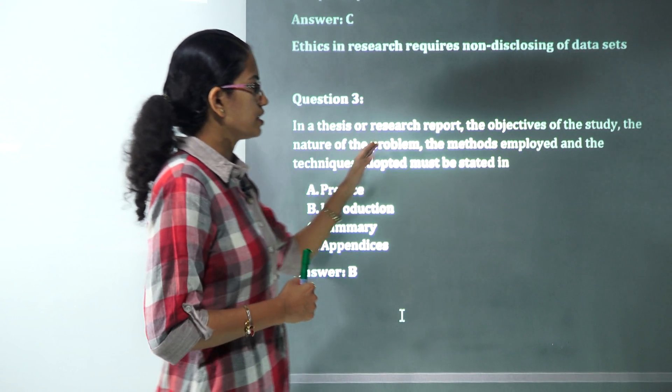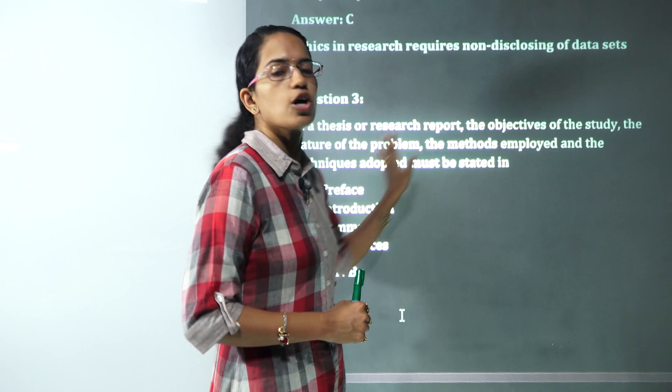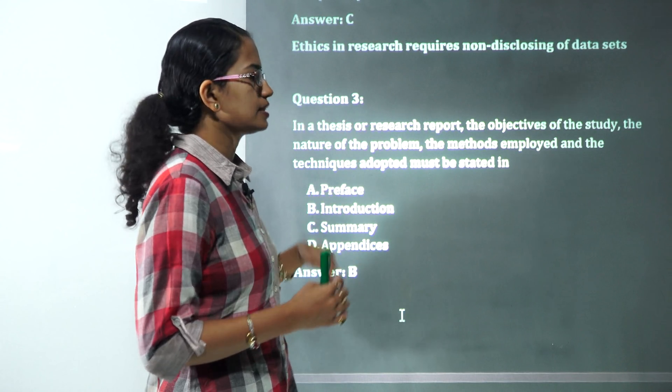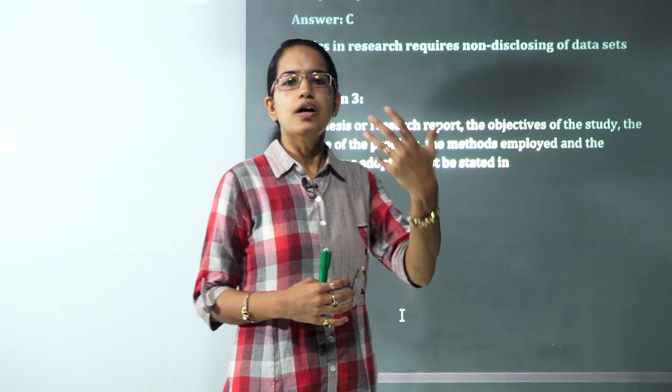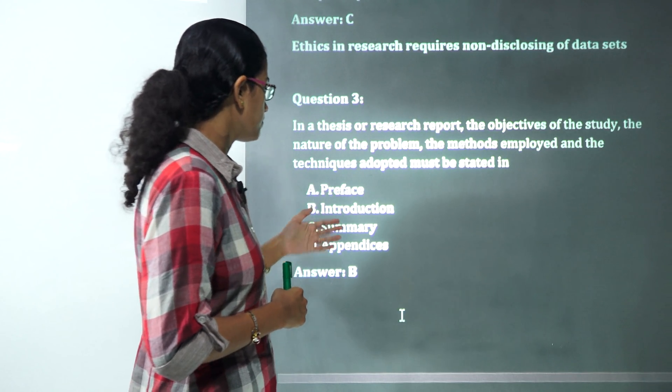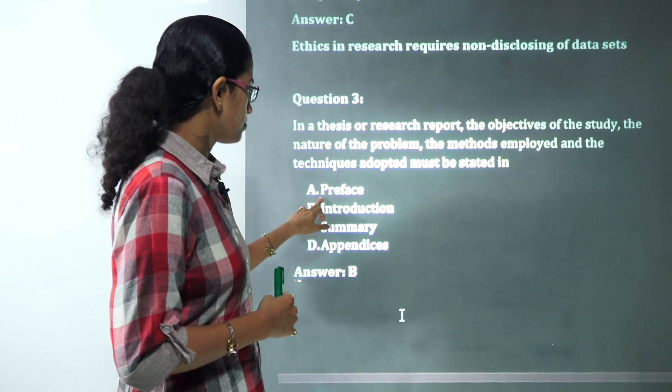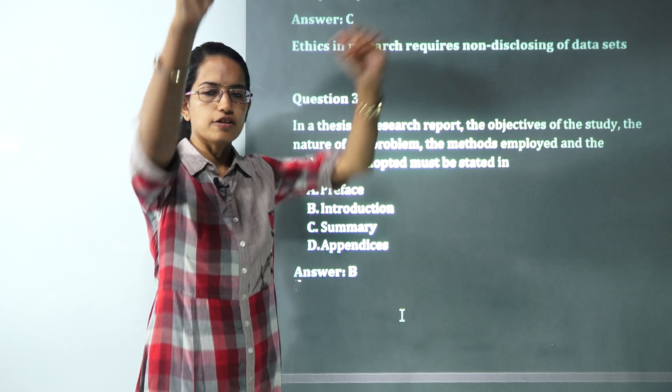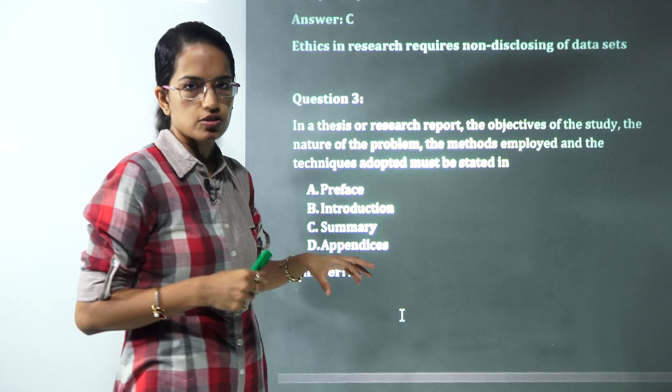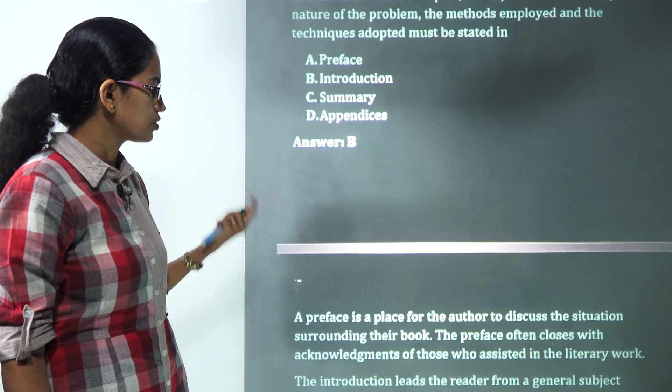In a thesis or a research report, the objectives of the study, the nature of the problem, methods and techniques, all of those are explained in the introduction. Preface is basically you try to credit someone. All those persons who have contributed for your literary help or the literary work would be given the notion there. Summary is basically a quick summarization but it does not include the exact objectives and the methodology employed. Appendix is towards the end. So you have B as the correct option, that's the introduction.